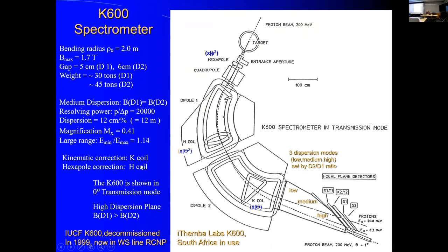Here you see the K600 spectrometer. That spectrometer was decommissioned in 2000 at IUCF, running until then as a high-resolution spectrometer. A copy of it is running now at iThemba Labs, so if you want to use such an instrument, you still can. This shows two big dipoles to provide a very large dispersion. It has a quadrupole at the beginning to bring the beam nicely through the relatively small gap. It is very expensive to make large magnets with large gaps.